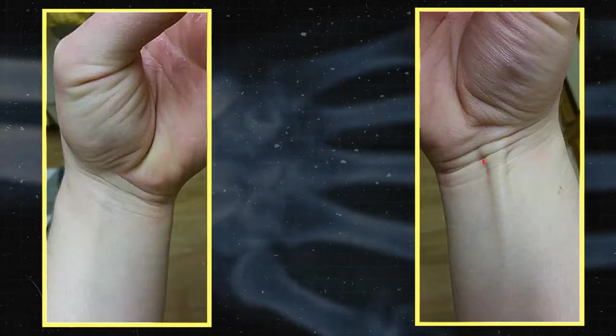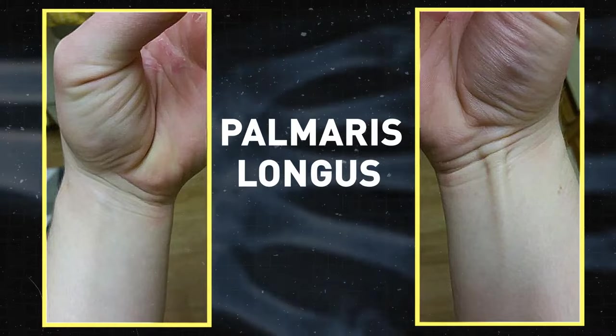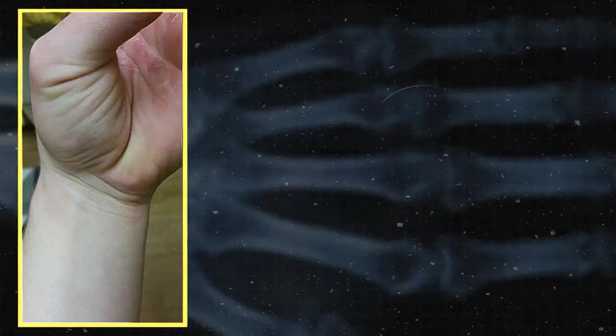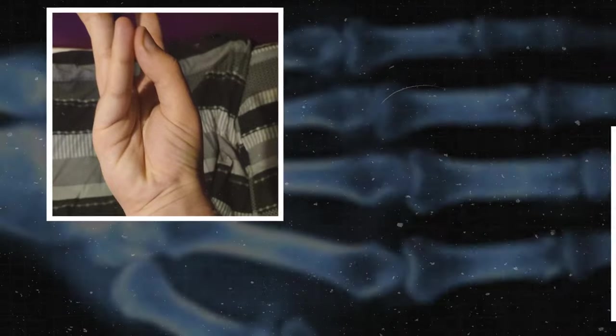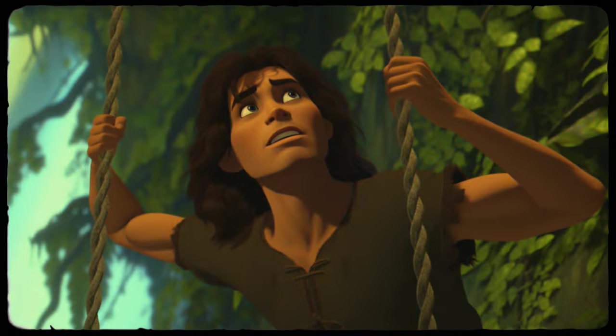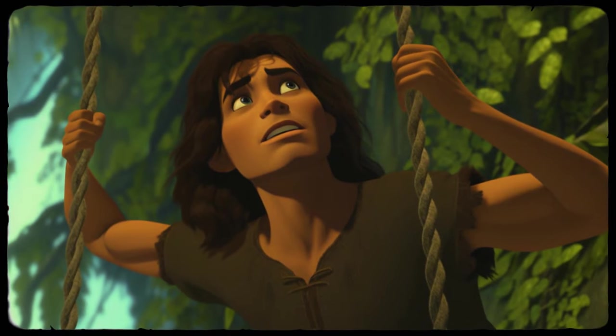Meet the palmaris longus. About 85% of us still carry it around. Maybe you also have it. You can test it by putting your hand on a flat surface and making your pinky and thumb meet. If you spot a little tendon band doing the limbo in the middle of your wrist, then you've found it. It was there for gripping stuff and swinging around like Tarzan.